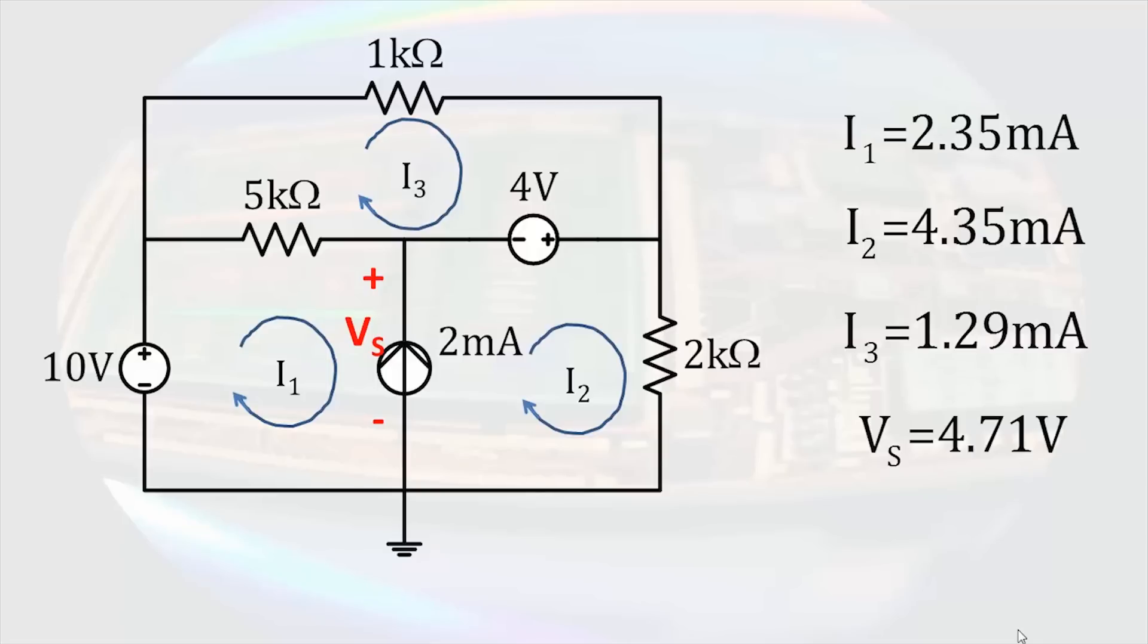We can compare these results to those obtained from the node voltage analysis to verify them. The voltage across the 2 milliamp source is 4.71 volts for each, and the current through the 4 volt source is 3.06 milliamps, if we take the difference between I2 and I3 that we just calculated.